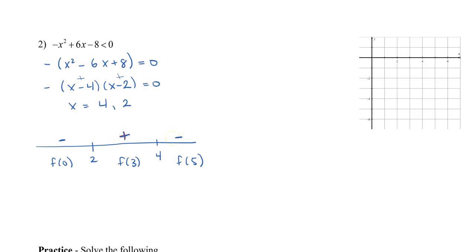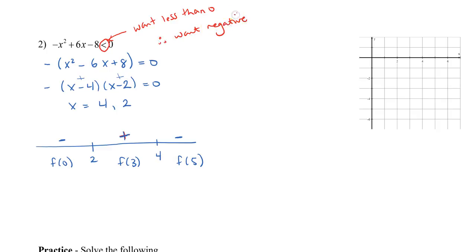Now, which solutions do I want? Looking back, I can see I have a less than symbol. Less than means that we want less than 0, which means that we want negative values. So which solutions gave me negative values? From my number line, I can see that happened when x was less than 2 and also when x is greater than 4.